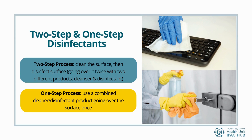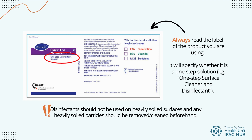The one-step process uses one product that acts as both a cleaner and disinfectant, so you only need to go over the surface once. Always read the label of the product you are using, as it will specify if it is a one-step solution — for example, it will say 'one-step surface cleaner and disinfectant.' Also keep in mind that any disinfectant wipes, even if they are a one-step, should not be used on heavily soiled surfaces — any heavily soiled particles should be removed and cleaned beforehand.